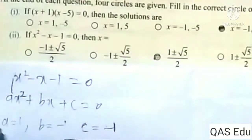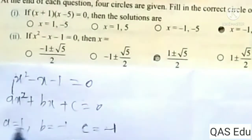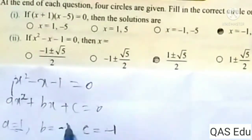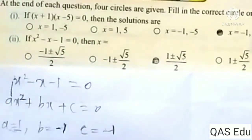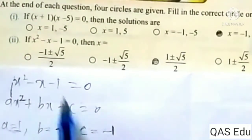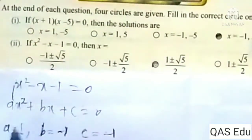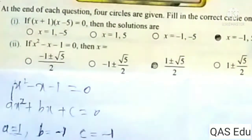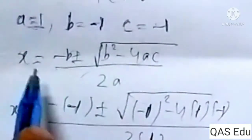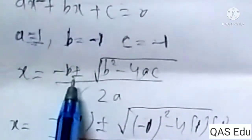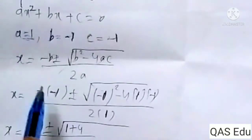So a first point: a is equal to 1, b is equal to minus 1, c is equal to minus 1. Then with a, b, c values, the quadratic formula is x equals minus b plus or minus square root of b squared minus 4ac, whole divided by 2a.